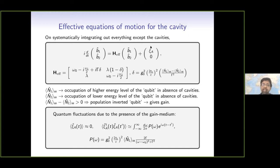More importantly, we have this noise term. Because of the population-inverted qubit, there will be some quantum fluctuations which give quantum noise, and that is captured here. You can take it as noise with a power spectral density given by this expression. This power spectral density is not phenomenological — it is derived microscopically from the full model.